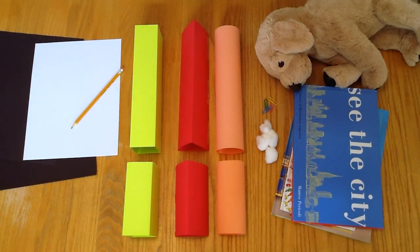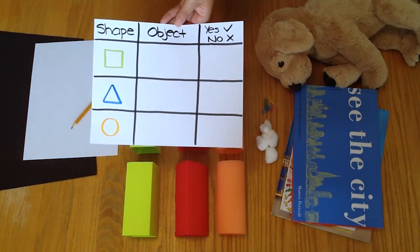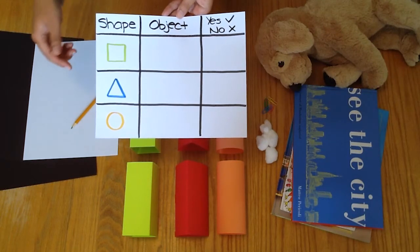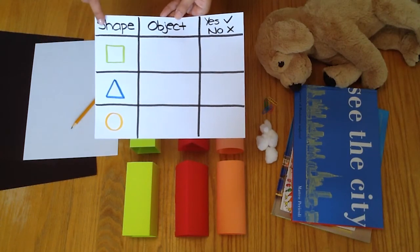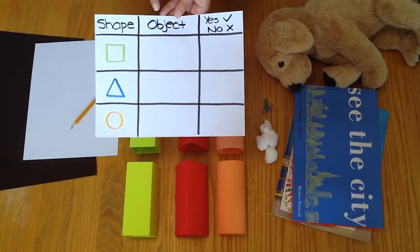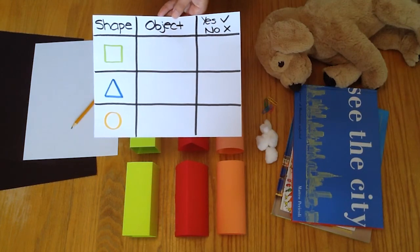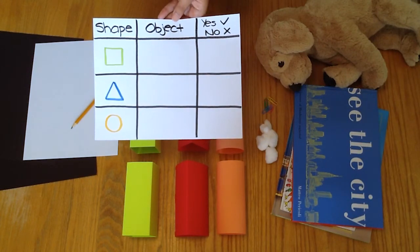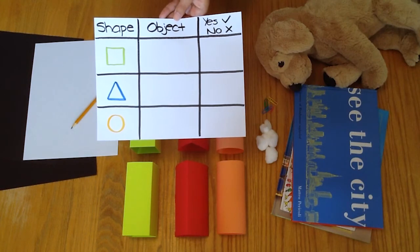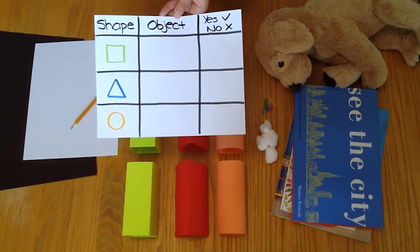Find a good space on the floor or table to test your structure. On your piece of paper, make a chart. On your chart you can write the shape of the columns and blocks, the different objects you found around your home, and a yes or no column for recording to see if your structure was able to hold or fall down from the strength of the objects.